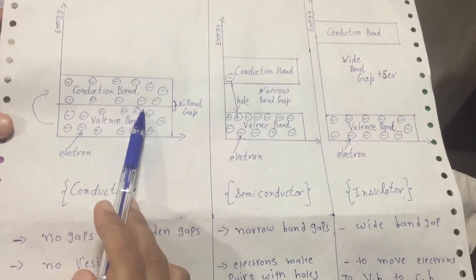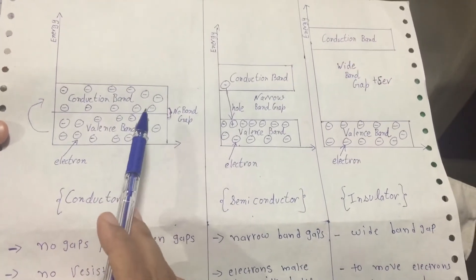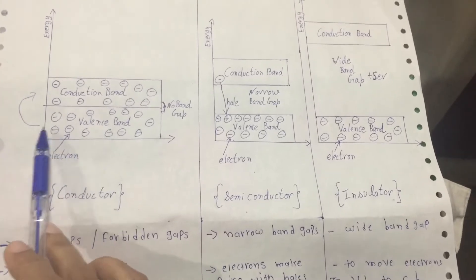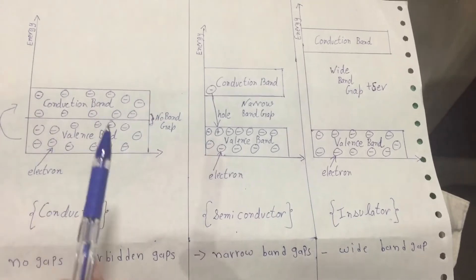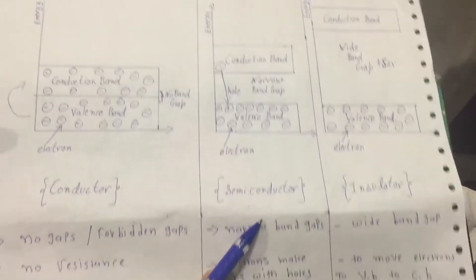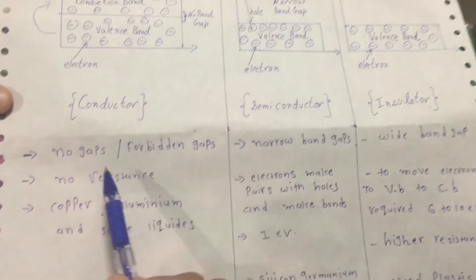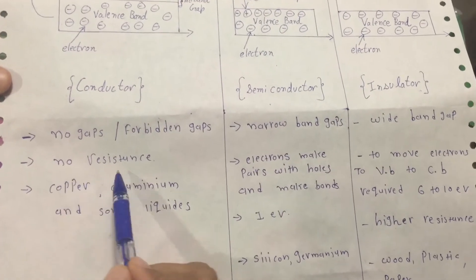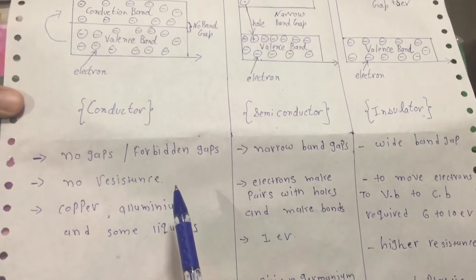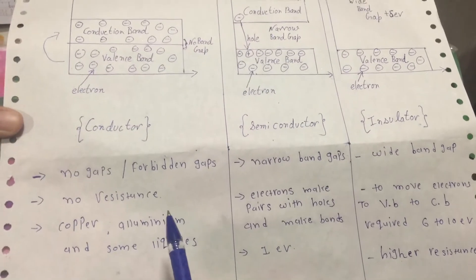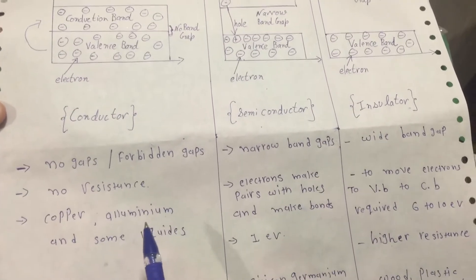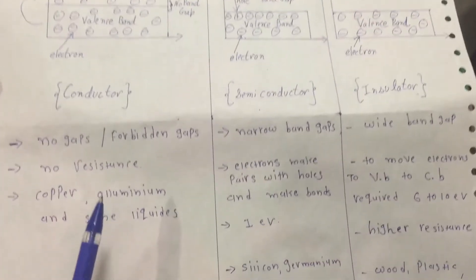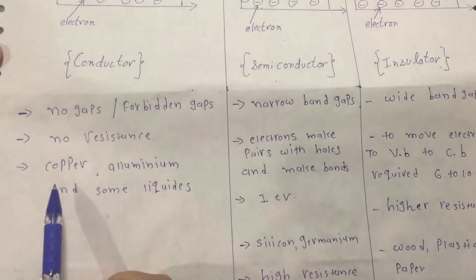In the valence band and conduction band of a conductor, there is no gap — or we can say no forbidden gap — that's why electrons move easily to the conduction band. Another reason is there is very little resistance in it.